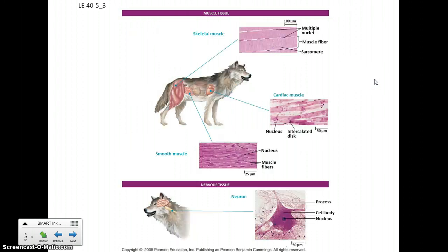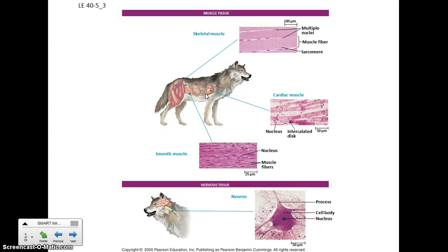Muscle tissue is clearly for movement, and there are three kinds. Skeletal muscle is for the most part voluntary motion. Cardiac muscle is in your heart. Smooth muscle lines some of the passageways in your body — your digestive system, for example — squeezing these tubes and keeping materials moving along. Cardiac and smooth are involuntary muscles; you don't have to think about them.